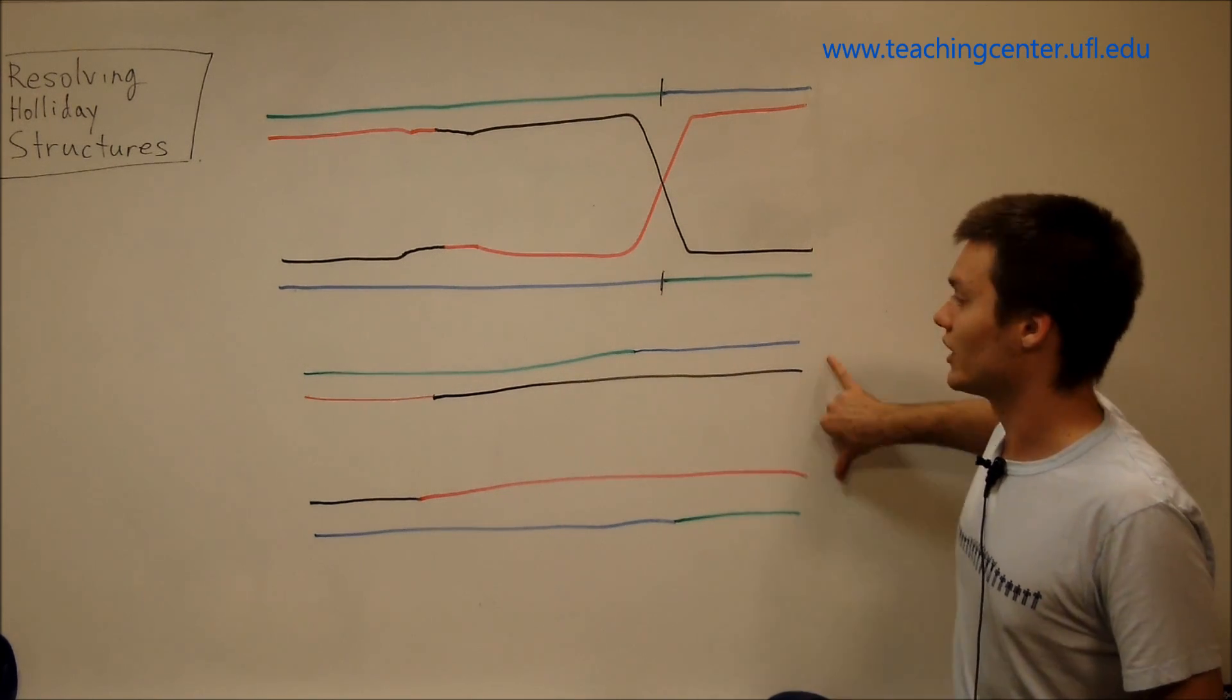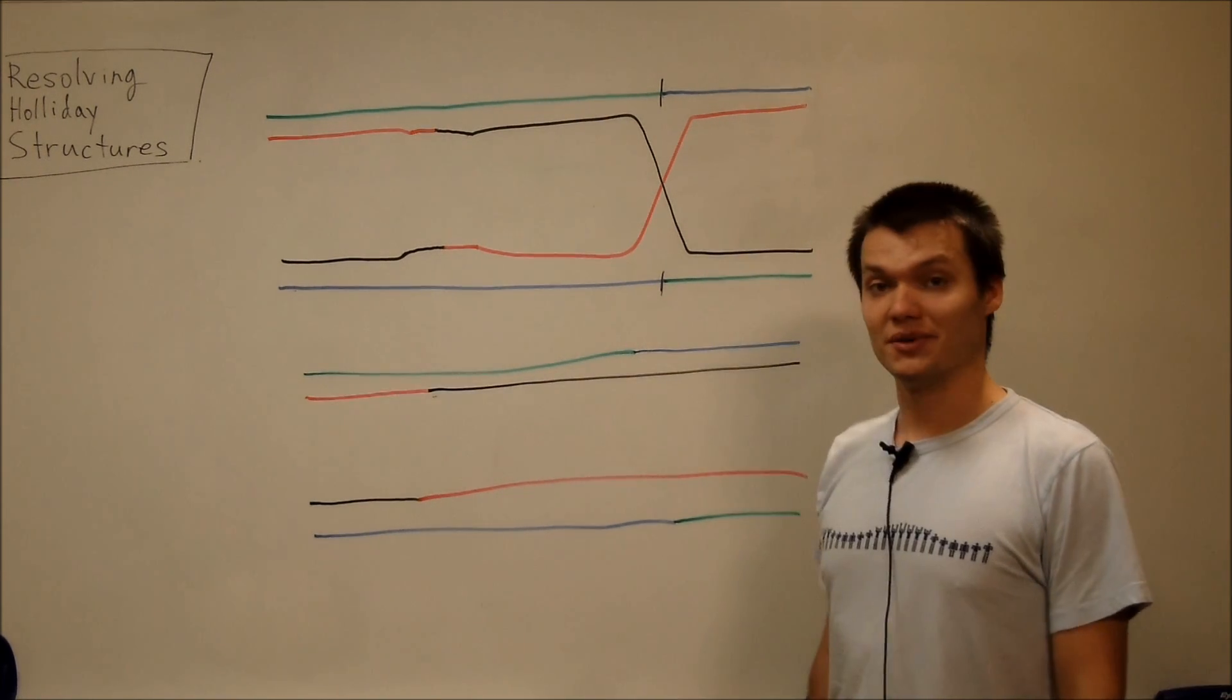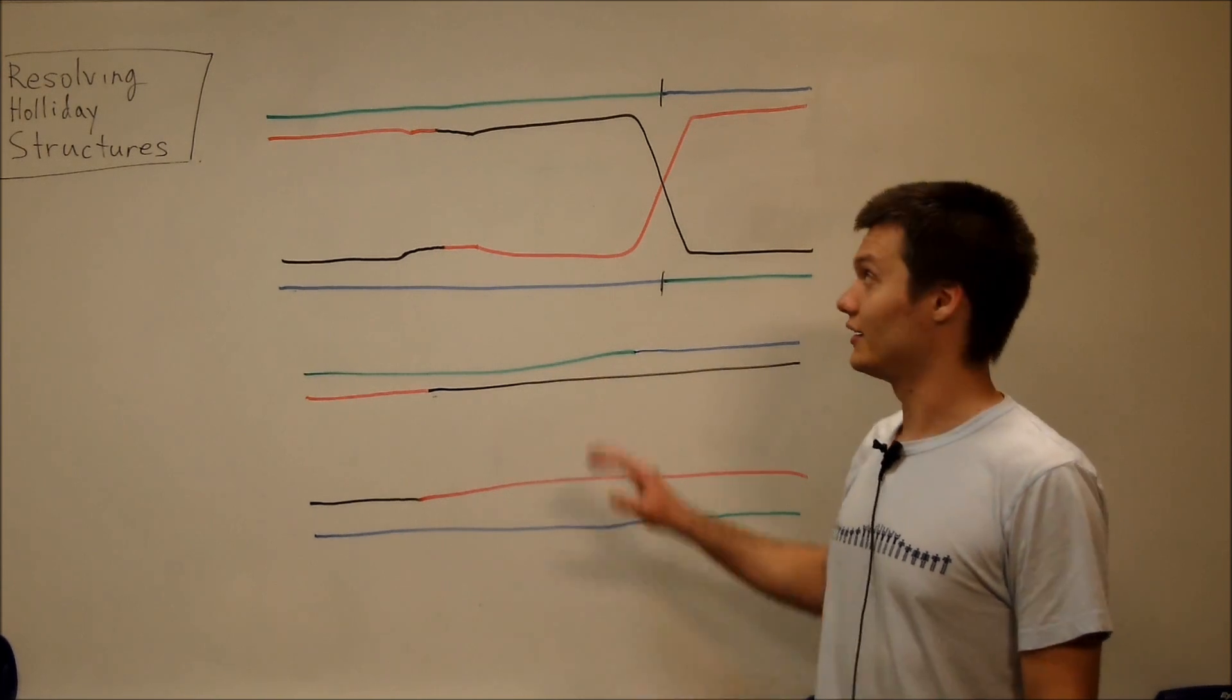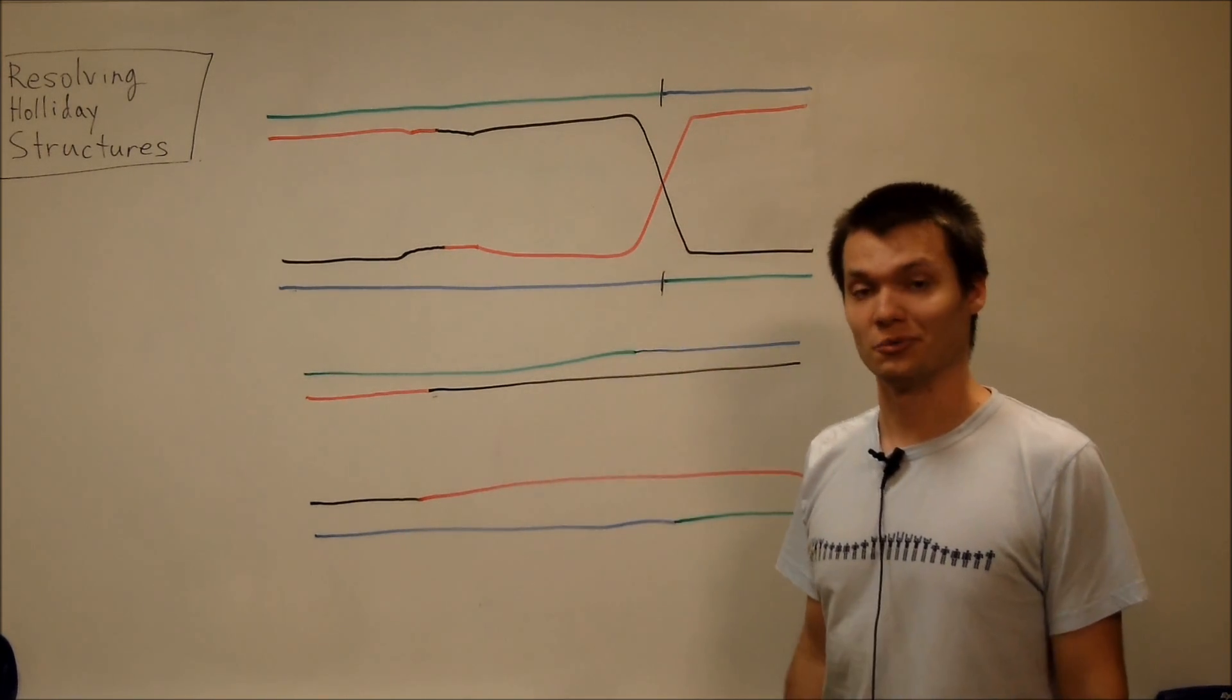And so, we call these recombinant chromosomes. That's been how to solve, how to quickly solve a double Holliday structure. Hope this was helpful.